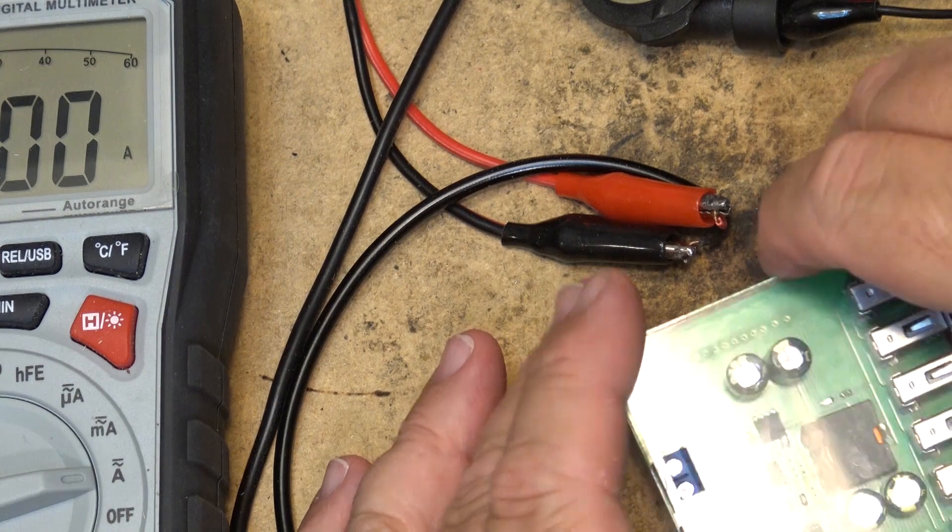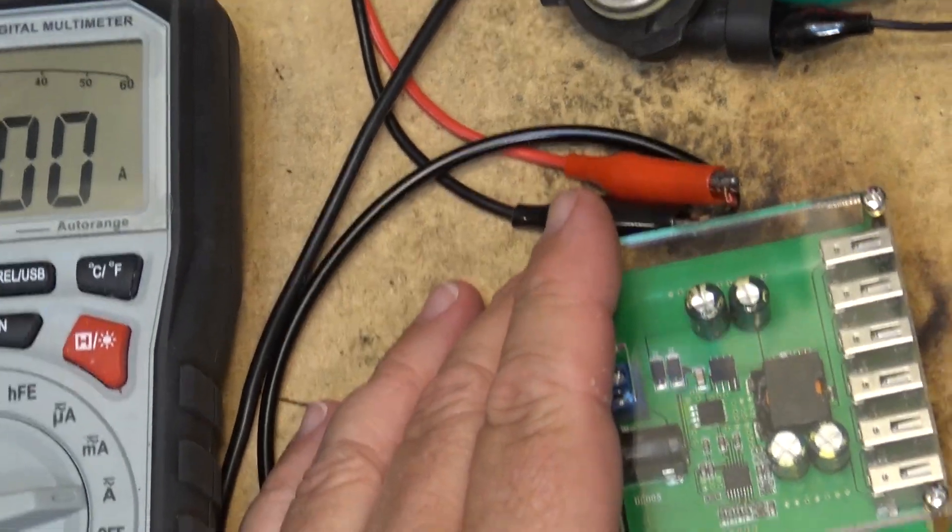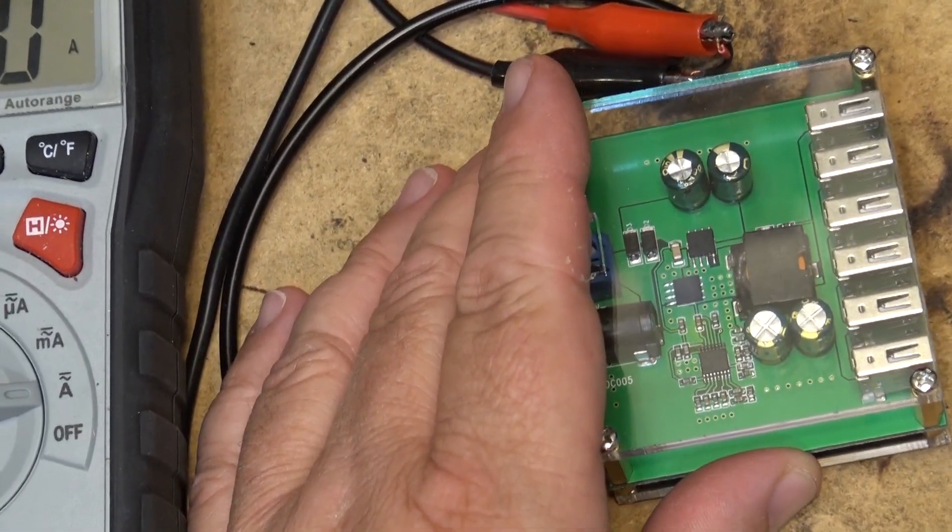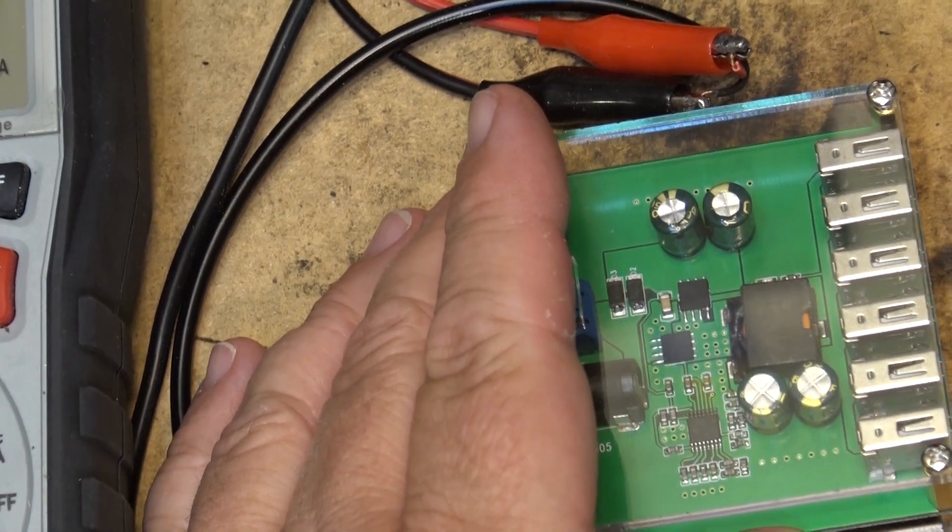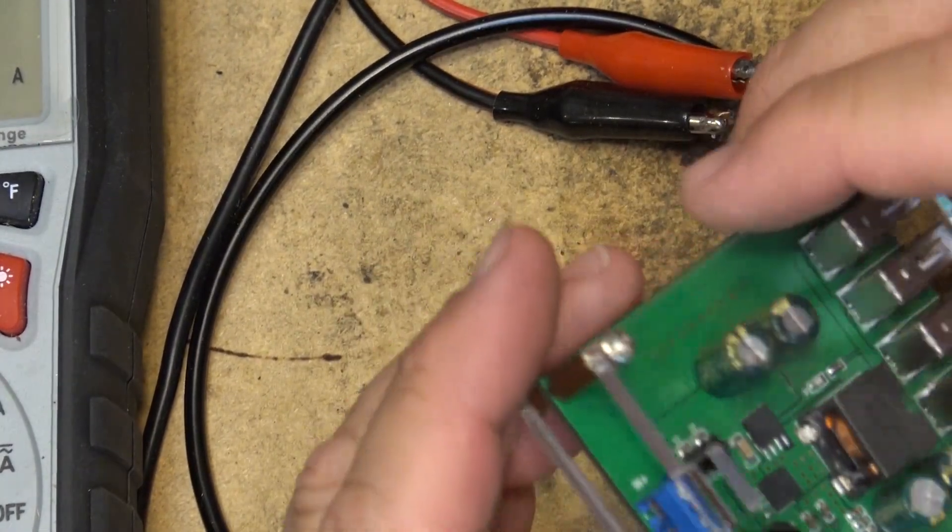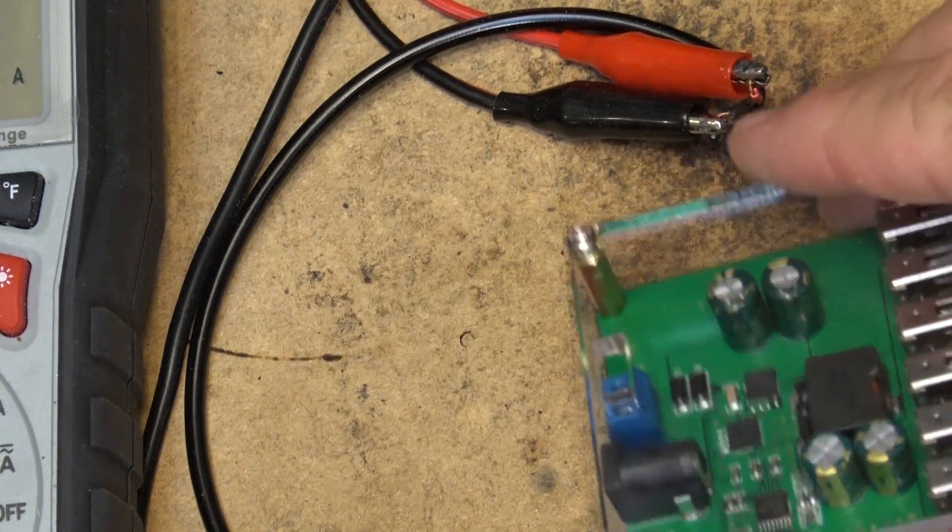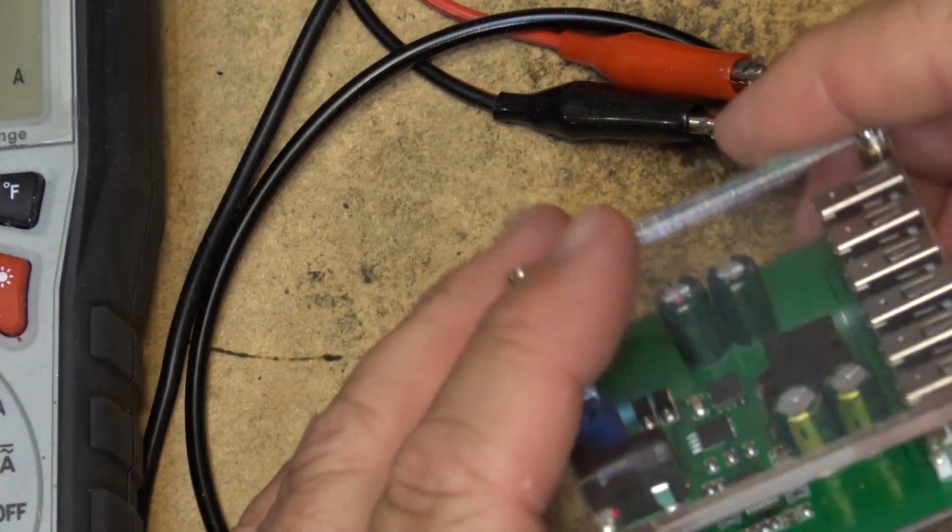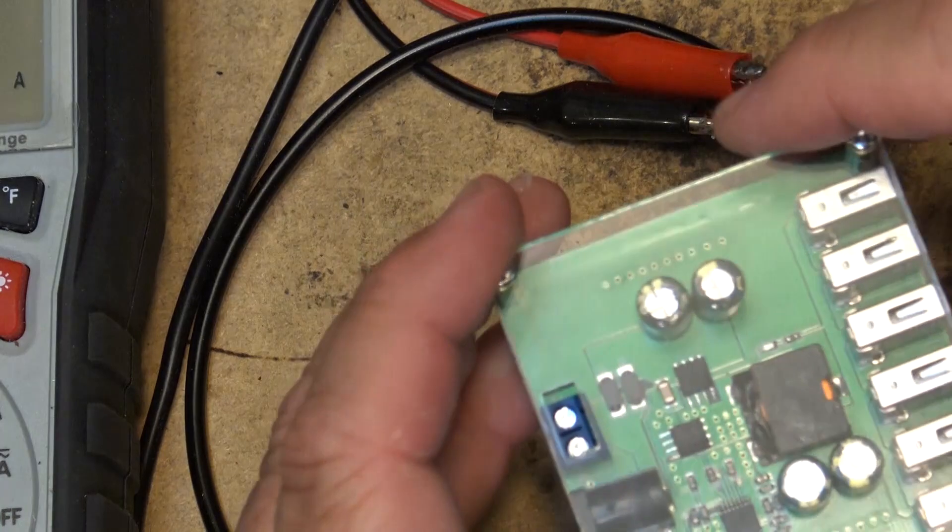And it comes in a nice little plexiglass case to protect it. It's open on the side. Something like this you'd want to mount somewhere, right? So that you're not going to get metal filings or anything here to short it out. You'd want to mount it in a case or mount it where it's going to be kind of semi-protected.